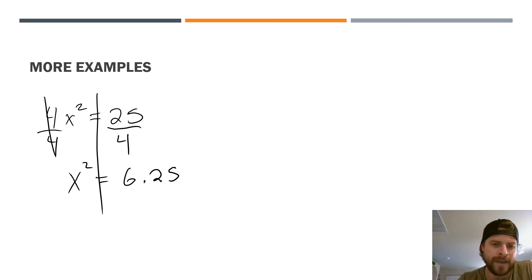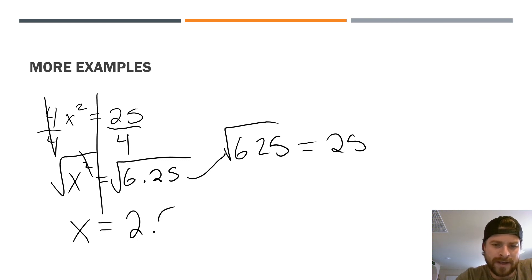Last and final step, just like the other, square root to get rid of that exponent of 2. Now, me personally, I look at that as 625. But you could also just type it in your calculator. Square root of 625 equals 25, but the square root of 6.25, we just need to add that decimal in there. That's going to be 2 and a half.